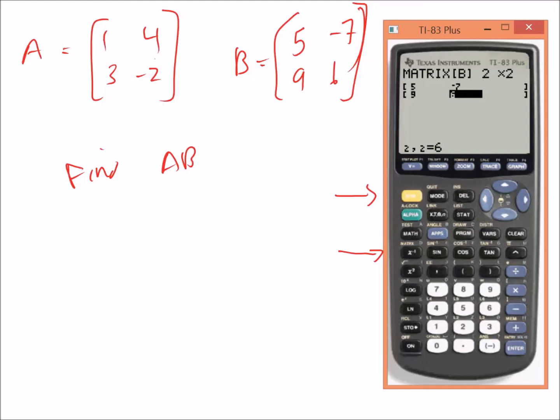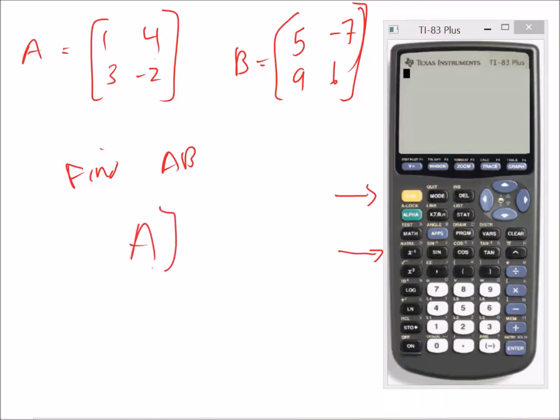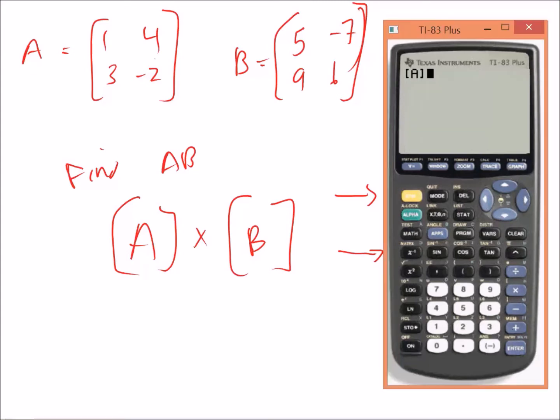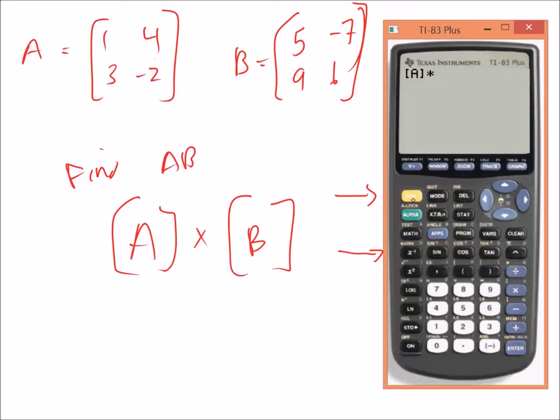Now we're going to quit and we're going to multiply A times B. So second, matrix, go down to names this time, because now these are actually the matrices we want. We're not going to edit them anymore, we just want to use them. So we'll hit matrix A enter, times matrix B enter, and then enter again. And it's going to calculate the answer for us, which is 41, 17, negative 3, negative 33.